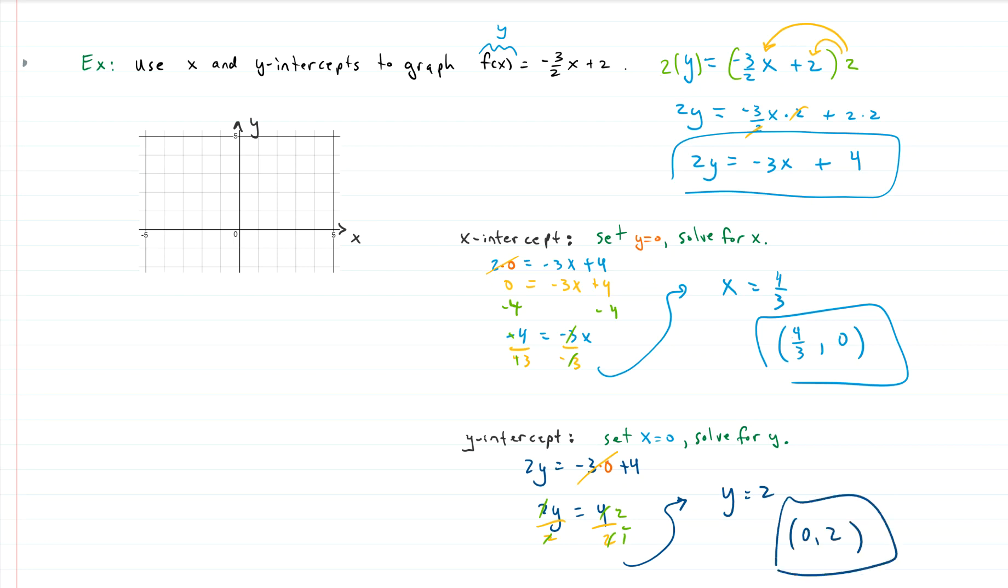Now let's put those on our graph. So our y-intercept is 0, 2. So that's right here. And I have 0, 2 for my y-intercept. And my x-intercept is 4 thirds and 0. So 3 thirds is 1, and 4 thirds would just be a little bit further. So this is 4 thirds and 0.